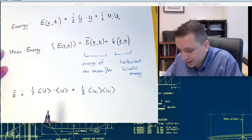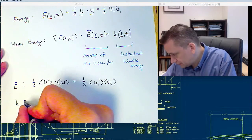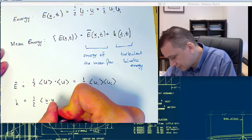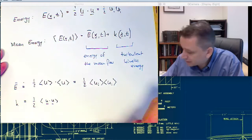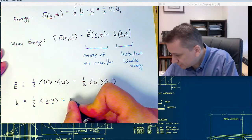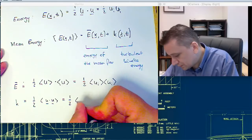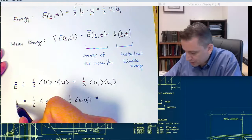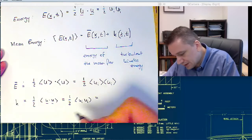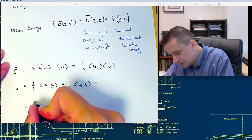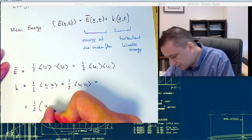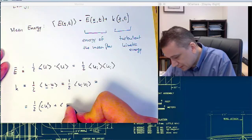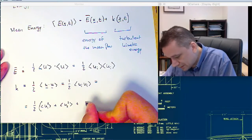And the turbulent kinetic energy k is then one half u scalar u, so the fluctuating part. In index notation, this one is then one half ui ui. Because this one becomes quite important later on, I want to write it out. So this one is equal one half u1 square plus u2 square plus u3 square.